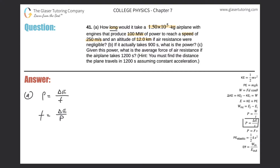They tell us the power is 100 megawatts. When we plug power into our equations, we prefer to be in watts. So: 100 megawatts × (10⁶ watts / 1 megawatt) = 10⁸ watts. That's our power value.